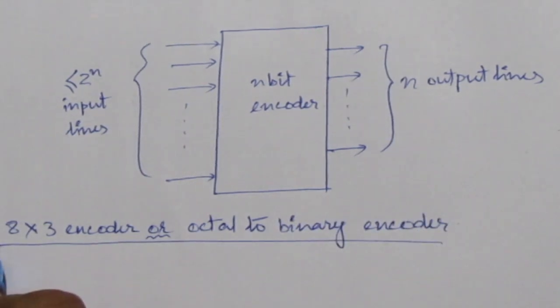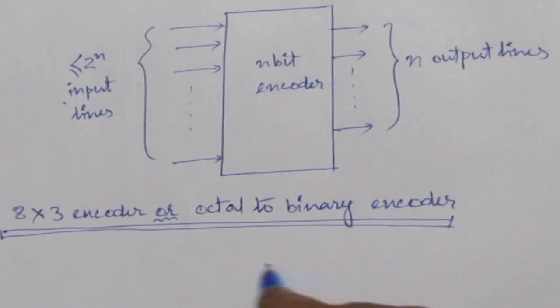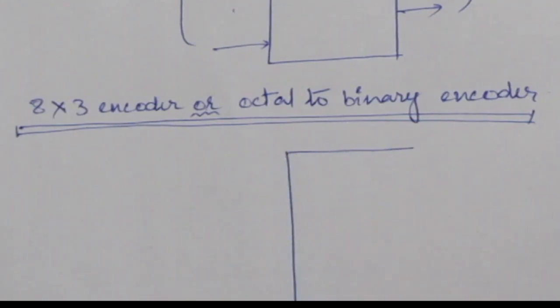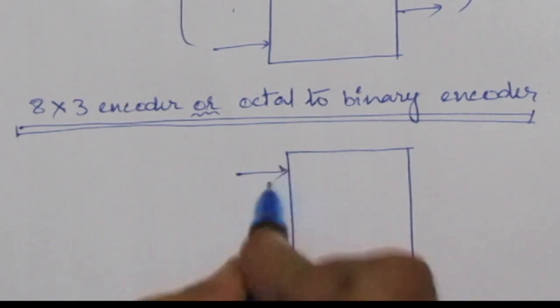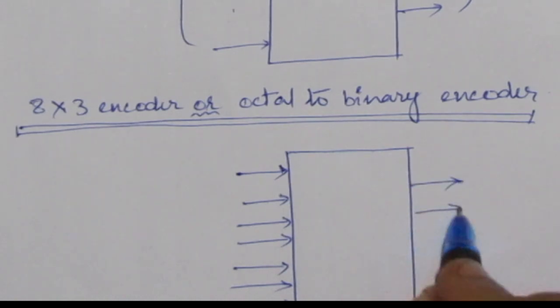Here we will have 8 input lines. The block diagram will be, we will have 8 input lines and 3 output lines.